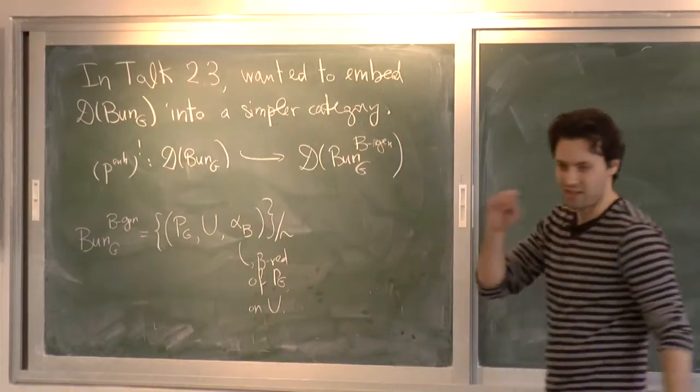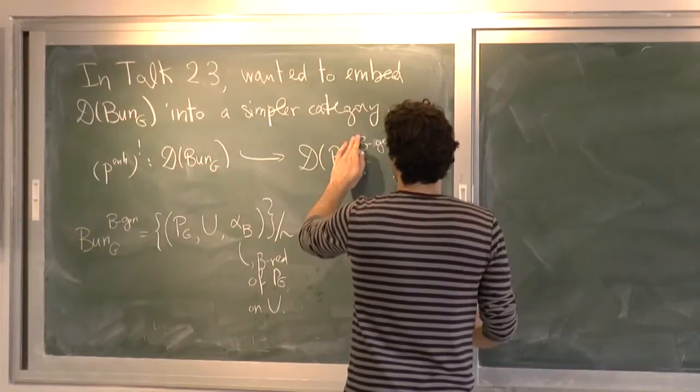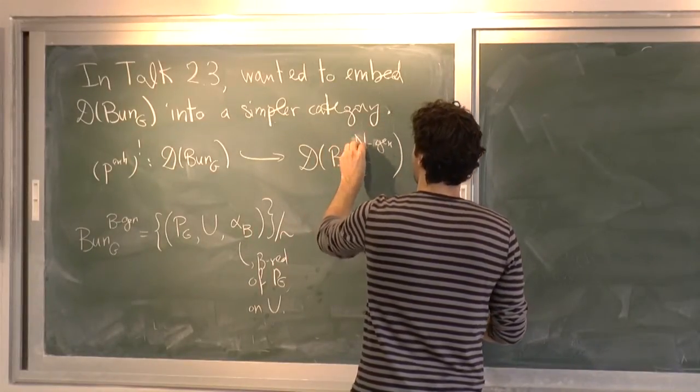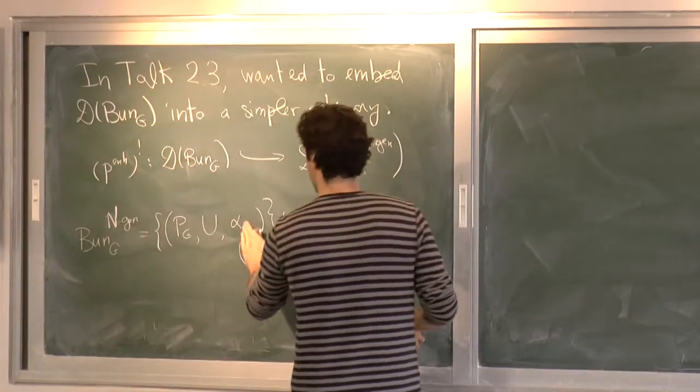So that was the punchline at the end of the last talk. And actually, if I had been doing the tutorial, I would have said that also we can do it instead of B, we can do it with N, the maximal unipotent. And the proof goes the same way. So let me just correct it here.